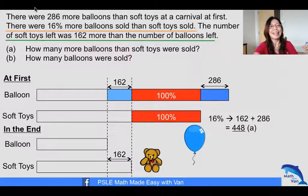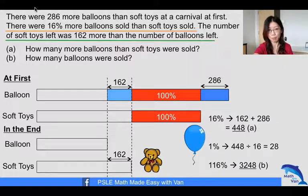So how many balloons were sold? We know that the balloon was 116%, so what is the value of 16%? As you can see, if we have worked out what is 16%, we know how to work out 1% and so on and so forth. You see that this question can be solved easily.